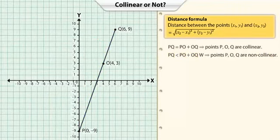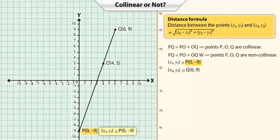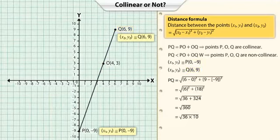Let's use the distance formula to check if points P, O, Q are collinear. Let us begin by finding the distance between P(0, -9) and Q(6, 9). Substituting these values in the distance formula, we get the distance of PQ as 6 times the square root of 10.